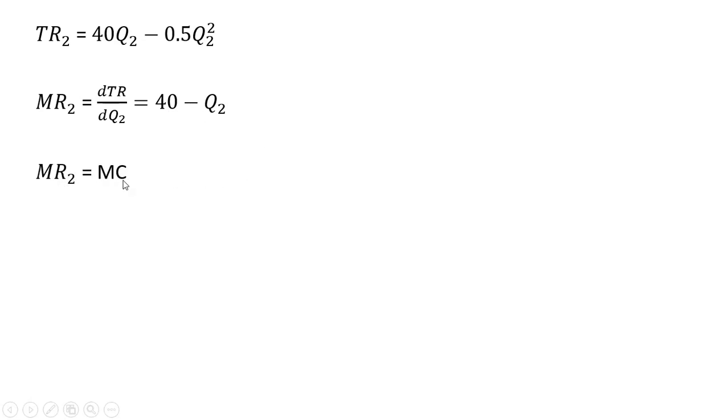Setting this marginal revenue equal to marginal cost. Marginal cost is still constant at 10. Solving for the discount, how many units are going to be discounted beyond 60. And that'll be 30 units.